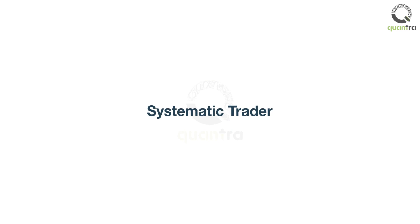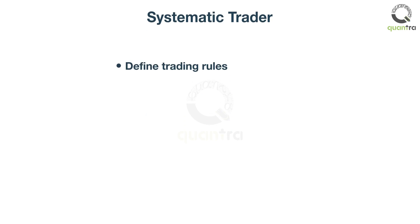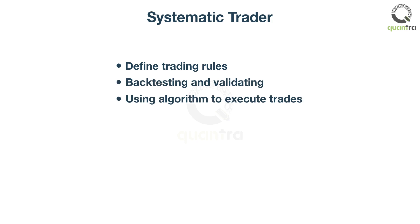In contrast, a systematic trader relies on his strategy to make the correct decision. He defines trading rules and backtests them. He is confident in his trading strategy as he has validated it. This strategy is then converted into an algorithm using a programming language such as Python. The algorithm takes care of the entry and exit of a trade.